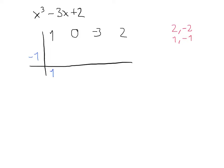1 times minus 1 is minus 1. Plus 0 gives me minus 1. Minus 1 times minus 1 is 1. 1 plus minus 3 is minus 2. Minus 2 times minus 1 is 2 positive. And here I get a 4. Now I did not get a 0 over here, and if I don't get a 0, it means that minus 1 is not a root. So I have to try with another one of these numbers.